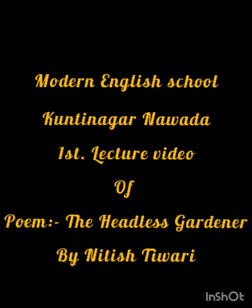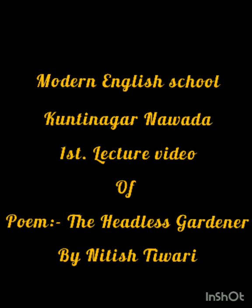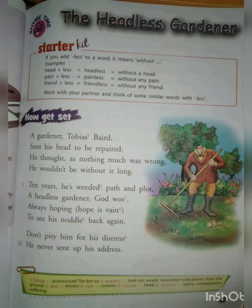So now let's start the poem with a recitation. A gardener, Tobias Baird, sent his head to be repaired. He thought, as nothing much was wrong, he wouldn't be without it long. Ten years he has waited, path and plot.